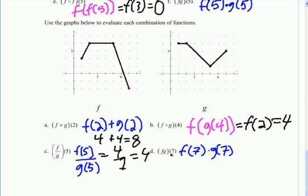Lastly, we have f times g(7). So f(7) times g(7). We can see that f(7) is -2. And we're multiplying times g(7), which looks like it is positive 3. So we're going to do -2 times positive 3. And that's -6. So that's a look at combining functions and composition of functions.